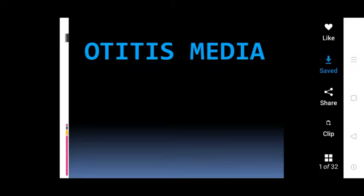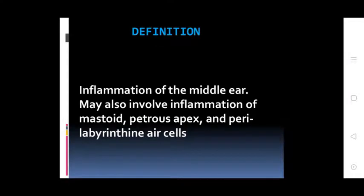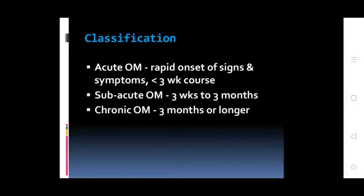Otitis Media. Definition: Inflammation of the middle ear, which may also involve inflammation of the mastoid, petrous apex, and perilabyrinthine ear cells. Classification: Acute Otitis Media — rapid onset of signs and symptoms, 3-week course. Sub-acute Otitis Media — 3 weeks to 3 months. Chronic Otitis Media — 3 months and beyond.